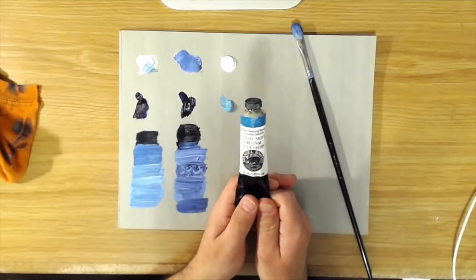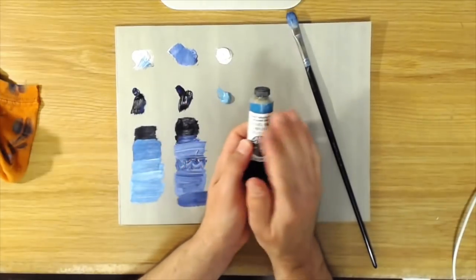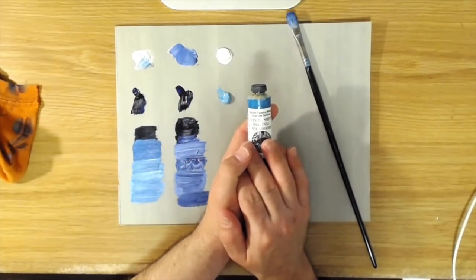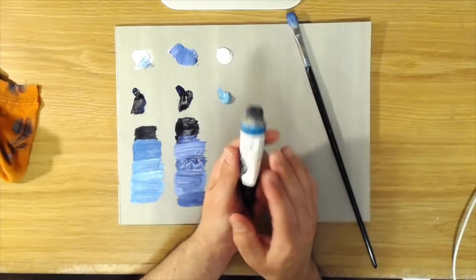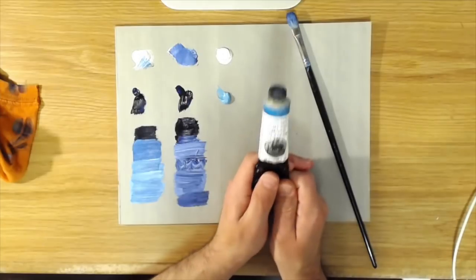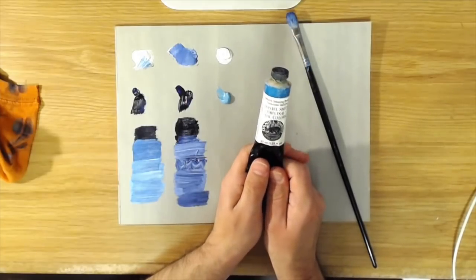And this is because this color is Daniel Smith's Sleeping Beauty turquoise. And if you don't know, Daniel Smith has a line both in oils and watercolor called their PrimaTek colors and they're actually ground up minerals rather than synthetic pigments.